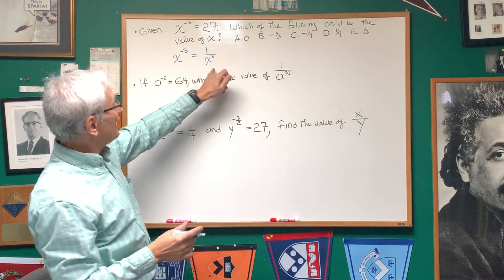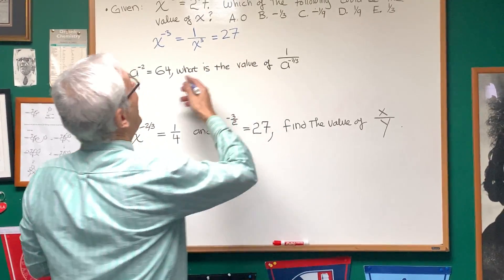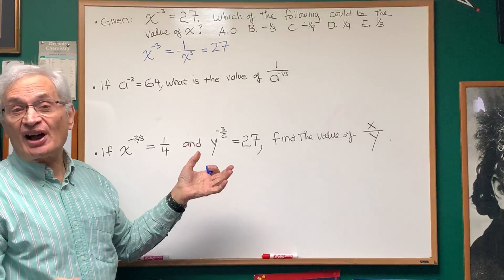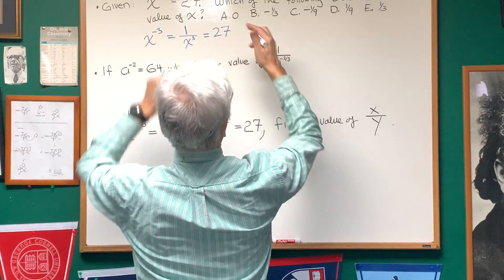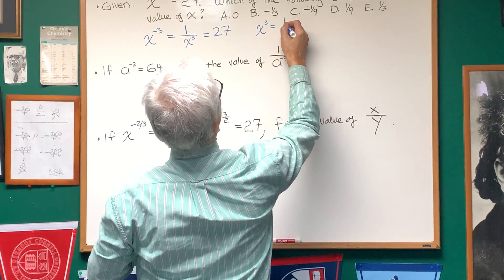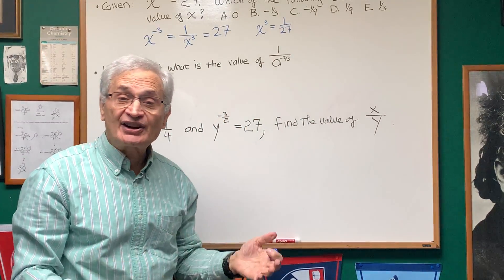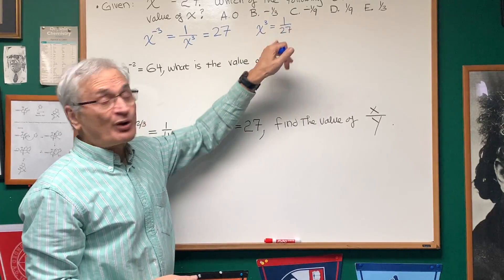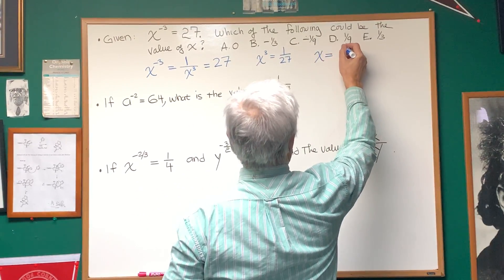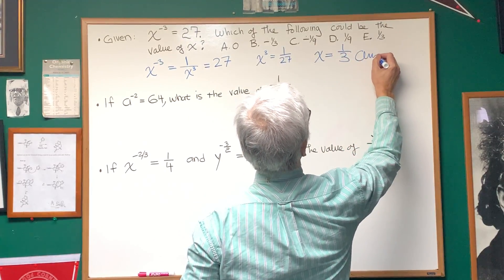That's the same thing as the original, and this is equal to 27. To solve a problem like that, let's take the inverse of both sides — flip both sides, raise each side to the negative one power — and we get x to the third power is one over 27. So to solve for x, we need to take the cube root of one over 27. The cube root of one is one, the cube root of 27 is three, and there's our answer.